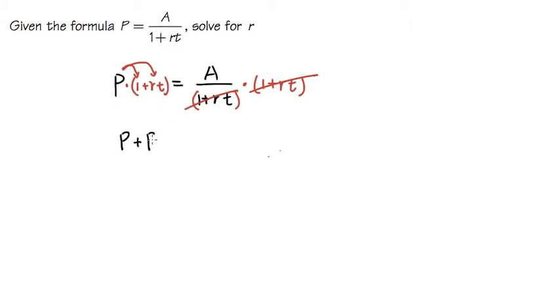This stands for P times r times t. And then this is equal to just A on the right-hand side, because the denominator canceled out with this already.